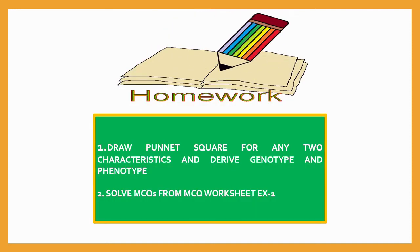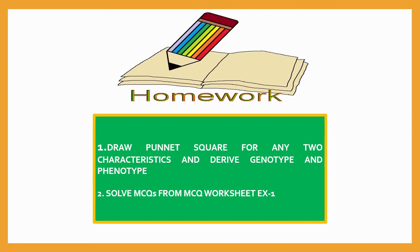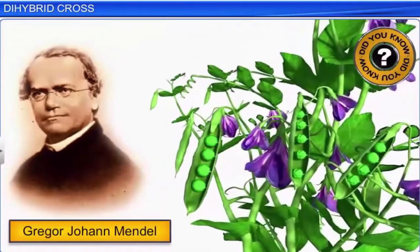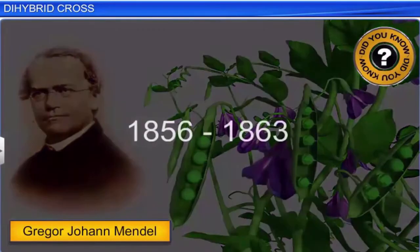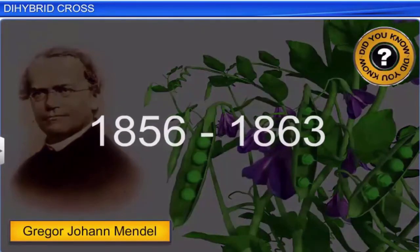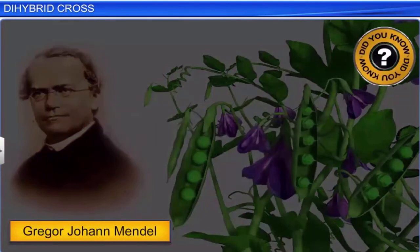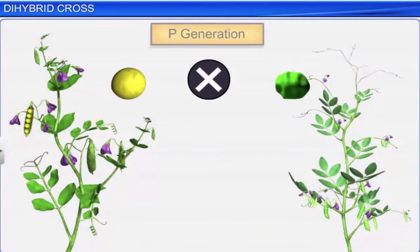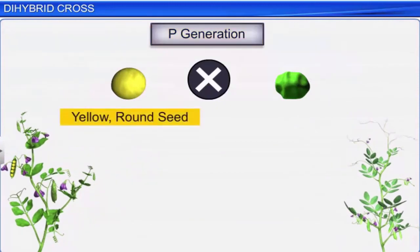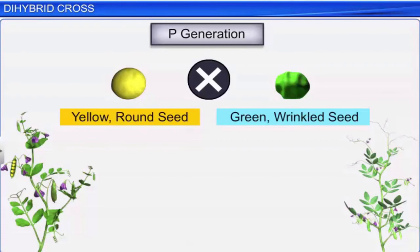This is your homework for today's lecture. Before we finish, let me summarize all topics using one animation video. Gregor Mendel cultivated and tested about 29,000 pea plants between 1856 and 1863. One such test was the crossing of pea plants with yellow and round seeds with those having green and wrinkled seeds. A cross between plants differing in two traits is known as a dihybrid cross.